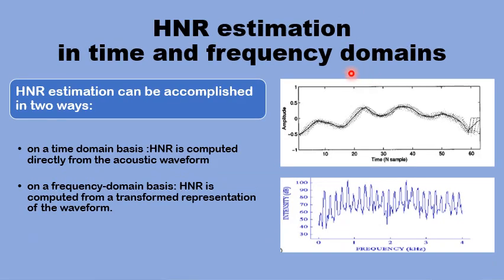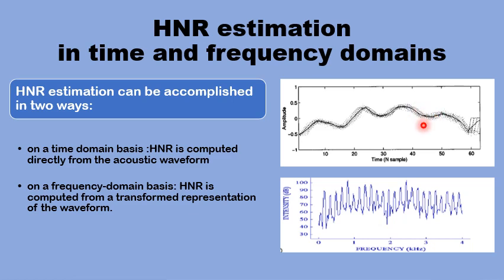How can the HNR be estimated? How can we split the energy in a voice signal into two parts: the regular harmonic part and the irregular noise part? There are two approaches — estimation in the time domain and estimation in the frequency domain. In the time domain, the amount of energy in a signal is expressed across a time frame; the regularity of the waves constitutes the harmonic part, while the minor fluctuations constitute the noise. In the frequency domain, the energy is expressed across a frequency range, and the signal is transformed to extract harmonic energy and noise energy.